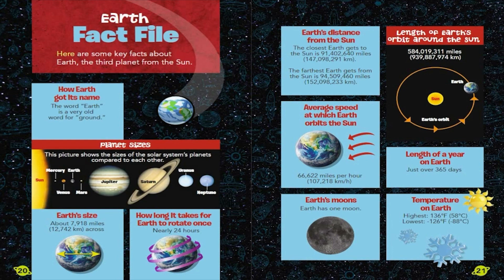Earth Fact File. Here are some key facts about Earth, the third planet from the Sun. How Earth got its name. The word Earth is a very old word for ground. This picture shows the sizes of the solar system's planets compared to each other. How long it takes for Earth to rotate once? Nearly 24 hours.